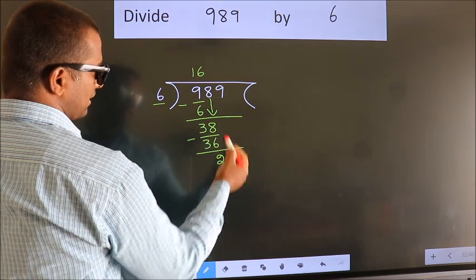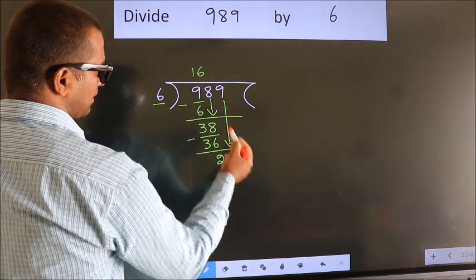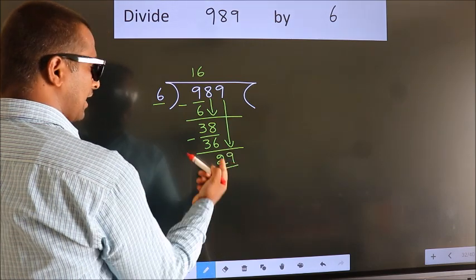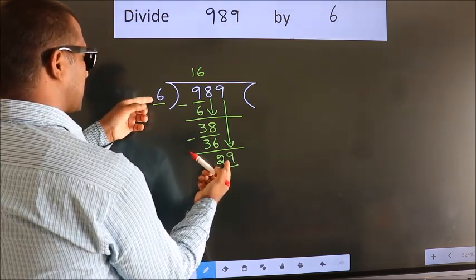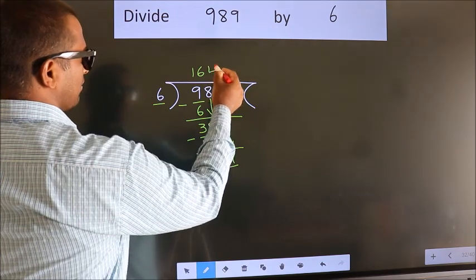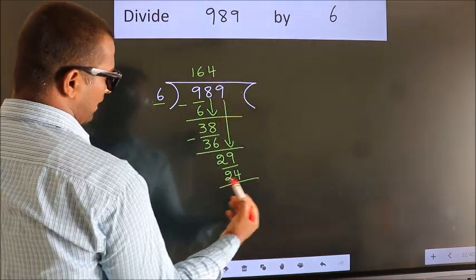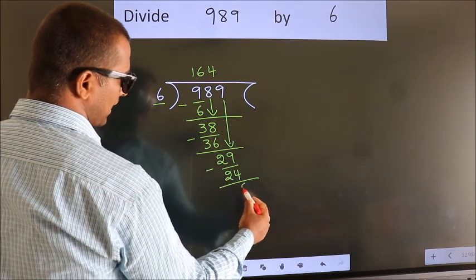After this, bring down the beside number, so 9 down, giving 29. A number close to 29 in the 6 table is 6 four 24. Now we subtract. We get 5.